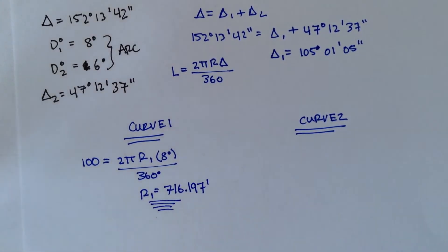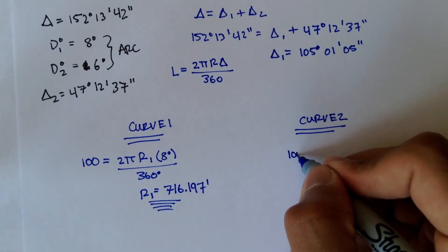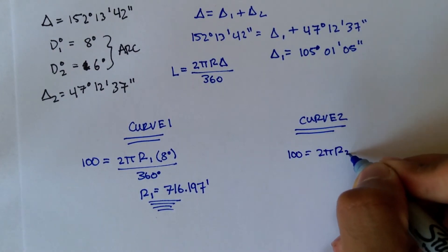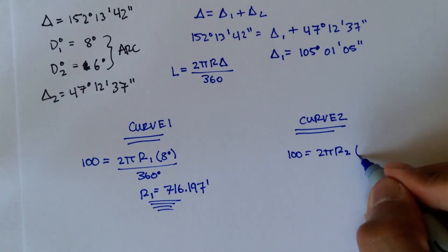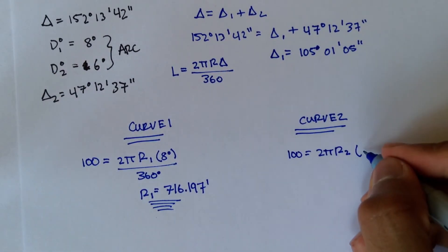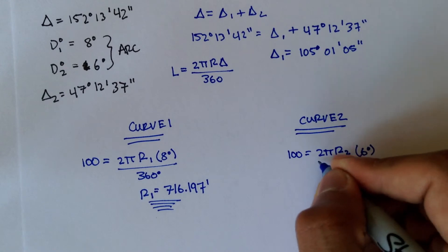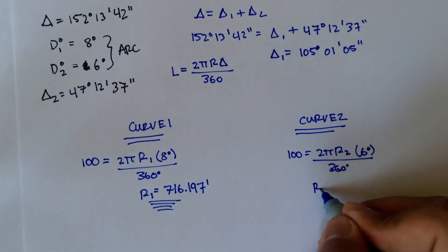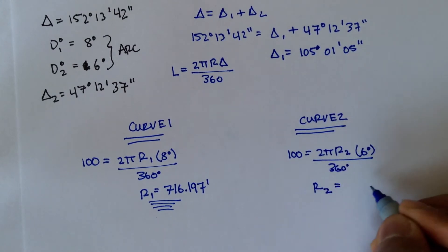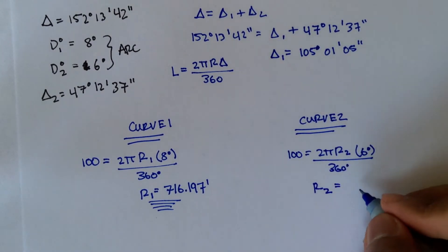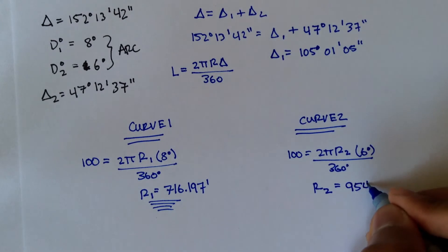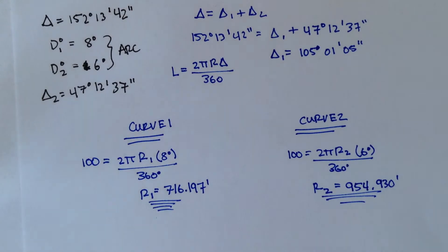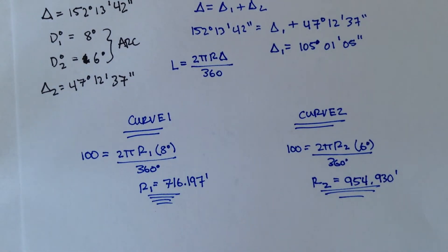Same thing for curve 2: 100 = 2π × R2 × (6 / 360). Solving for R2, you should get R2 = 954.930 feet. So now we know the radii for both curves.